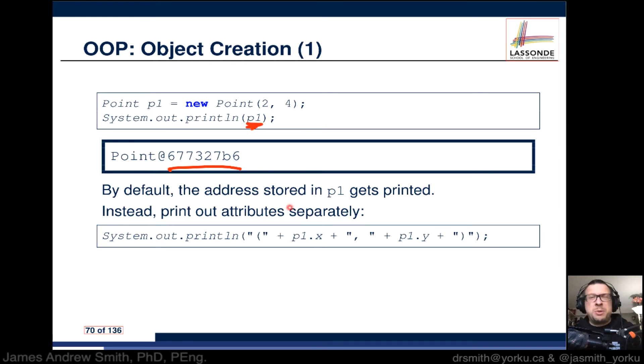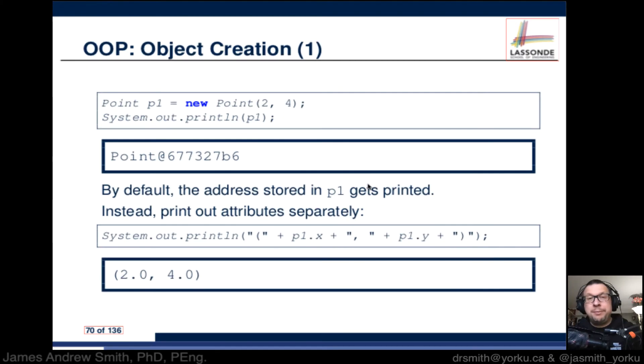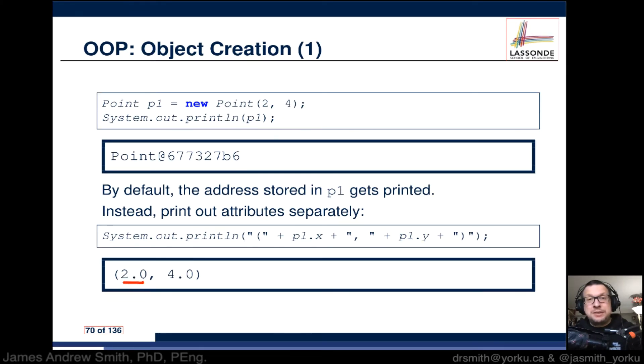That's what happens if you try to print out the object p1, but really what we want to be doing is printing out attributes of p1. Instead, we do something like system.out.println with a string that begins with a parenthesis and ends with another parenthesis. Then we use concatenation—this addition right here—to say after the parenthesis I want to see the x value of p1, then a comma and a space, and then the y value of p1 printed as well.